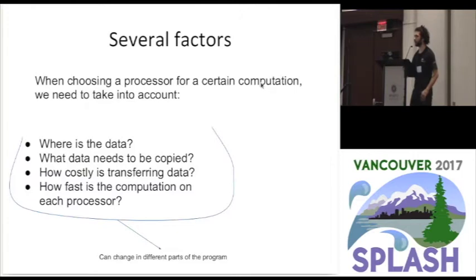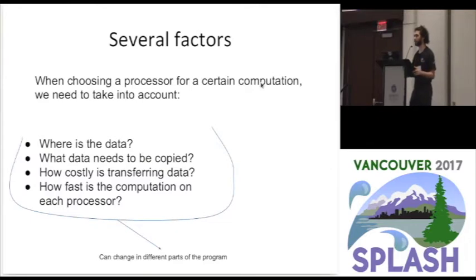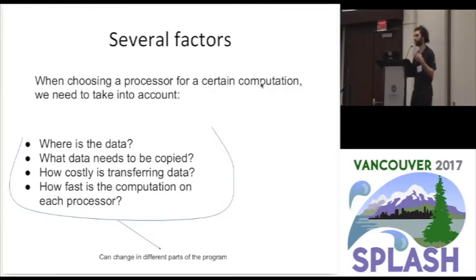To do that, there are several factors to consider. For example, in a CPU-GPU system without unified memory, if I want to run a computation on the GPU, the first step is to send the data to GPU memory. Where is that data — already on the GPU or on main memory? What data needs to be copied? If I just have a pointer to an array, what is the size of that array? How costly is the data transfer? That might kill the performance benefit of running the computation on the GPU.